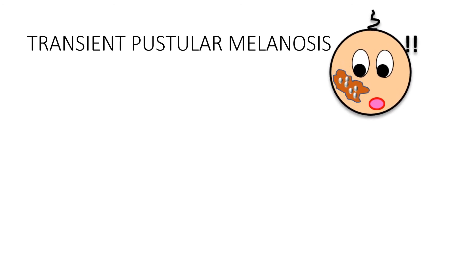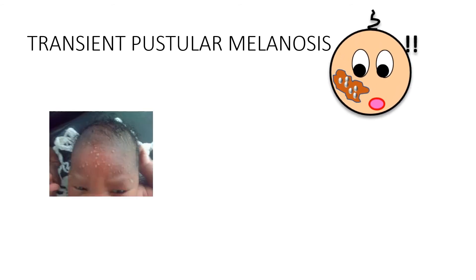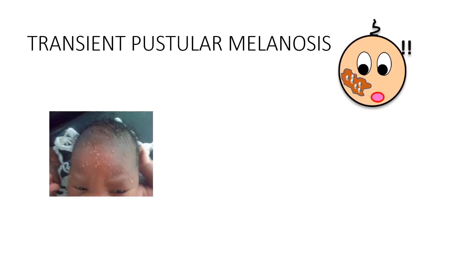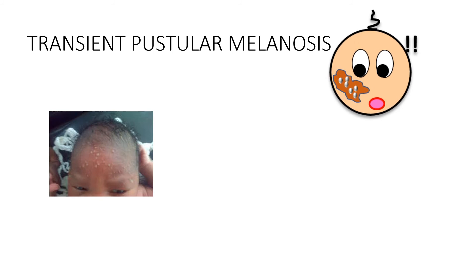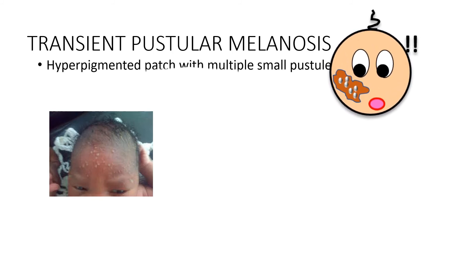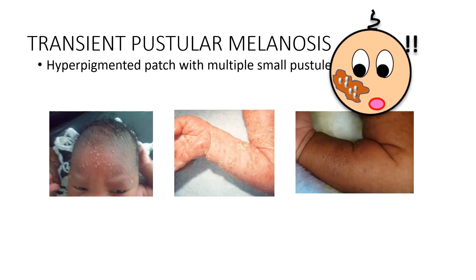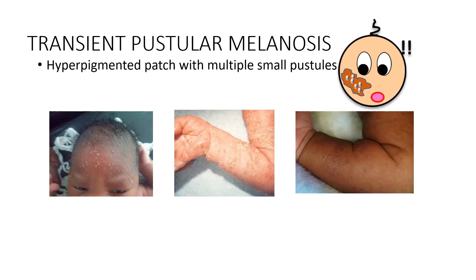Next is transient pustular melanosis. In this, we see a hyperpigmented patch with multiple small papules, as can be seen here.